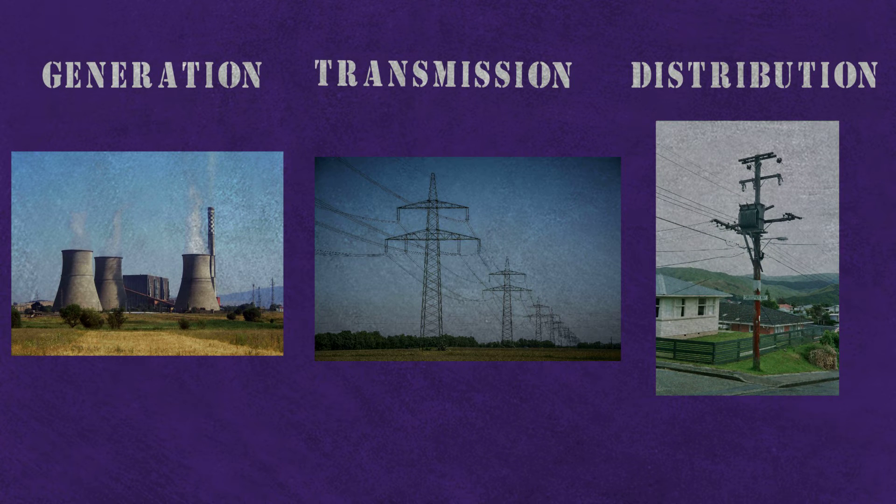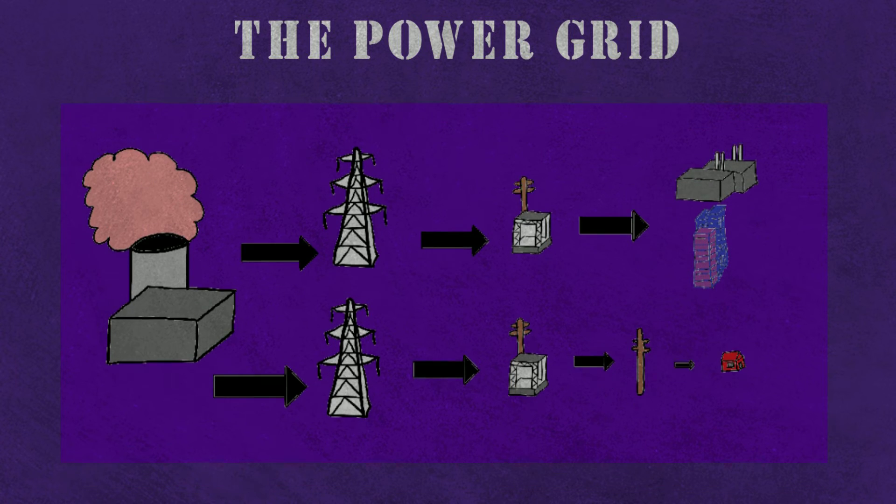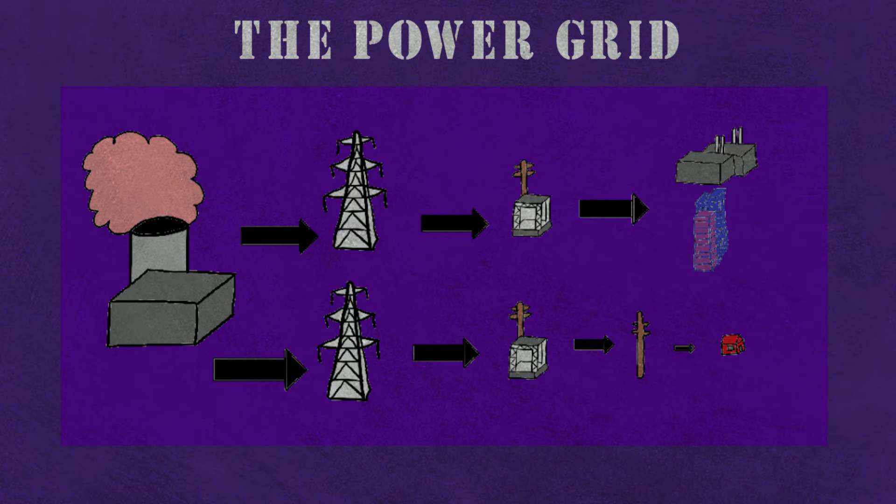The biggest and most known system that accomplishes this is the power grid. The grid is basically a network that generates, transmits, and distributes power to serve the requirements of businesses and the people. This network requires design, construction, maintenance, and development.